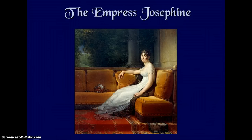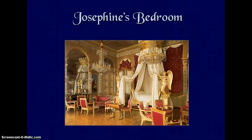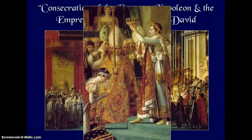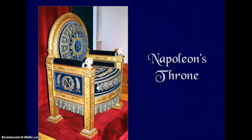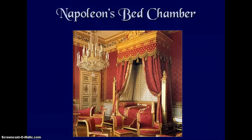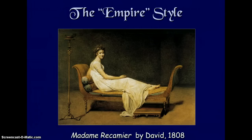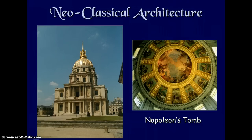Emperor Napoleon I and Empress Josephine — his wife — lived very lavishly, as seen in Josephine's bedroom. The consecration of Emperor Napoleon and Empress Josephine took place in 1806. Napoleon's throne, bedchamber, and imperial image were displayed everywhere, reflecting the neoclassical Empire style of architecture. This is also Napoleon's tomb.